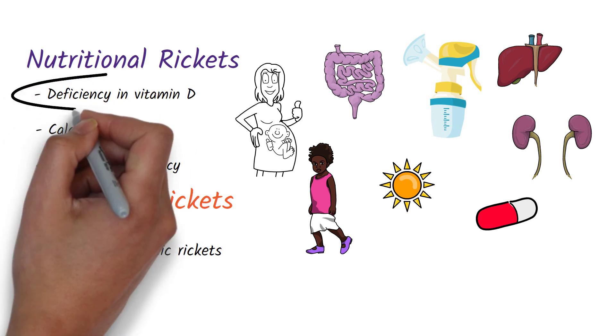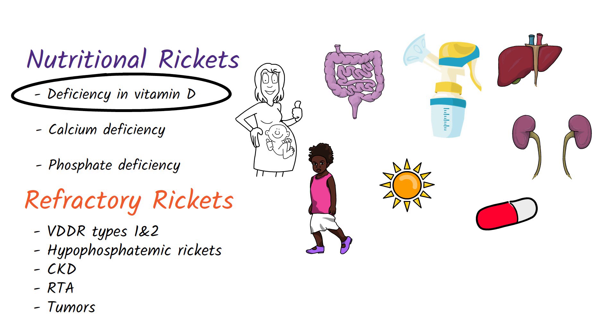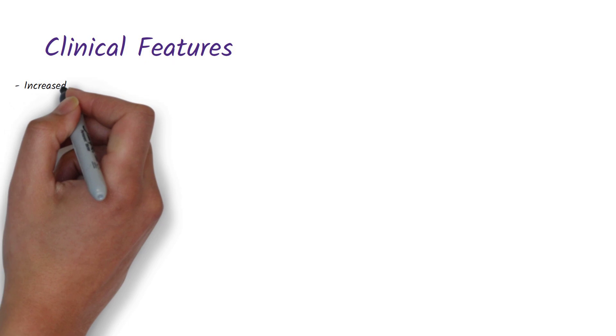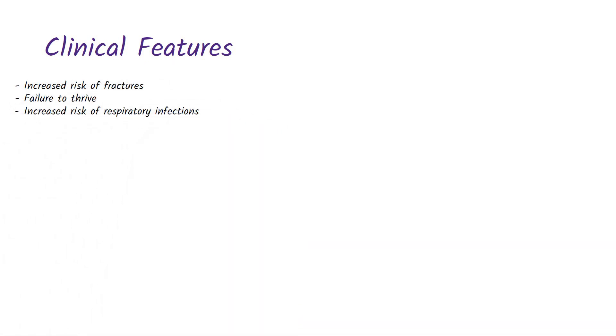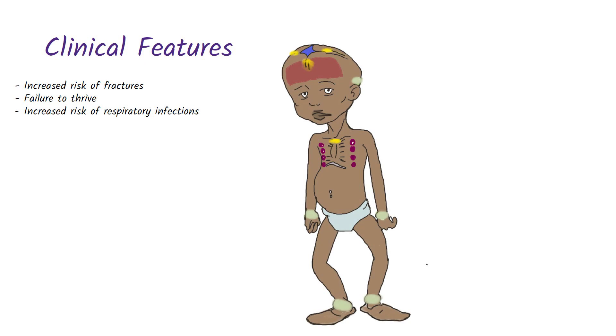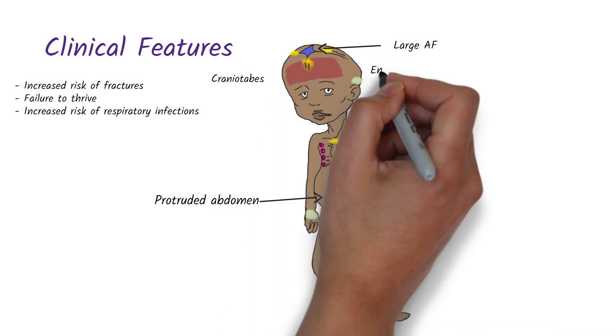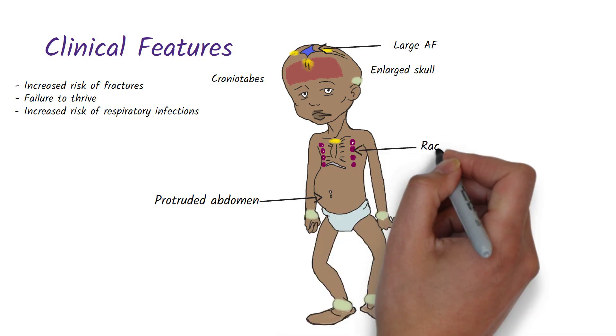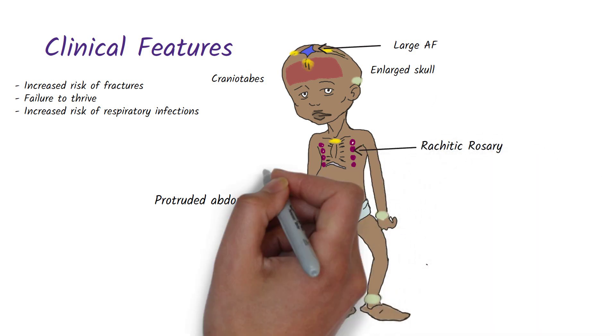Now let's look into the clinical features of rickets. The general features include an increased risk of fractures, failure to thrive, increased risk of respiratory infections, and a protruded abdomen. The skull features include craniotabes, or you can call this the ping-pong ball sign, due to softening of the cranial bones, delayed frontal closure so there will be a large anterior fontanelle, an enlarged skull due to frontal and parietal bossing.